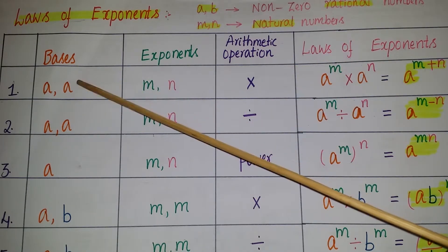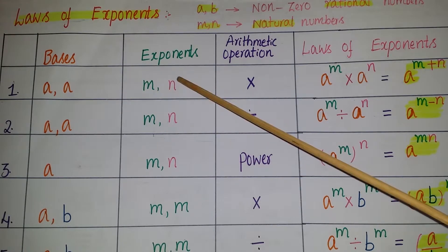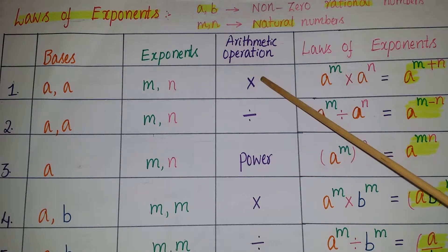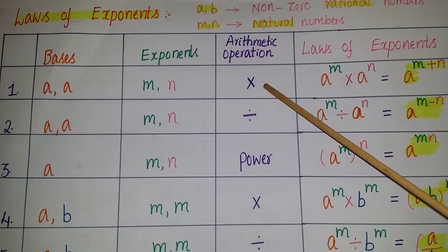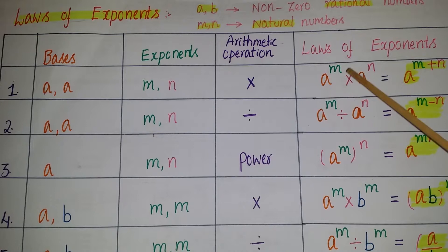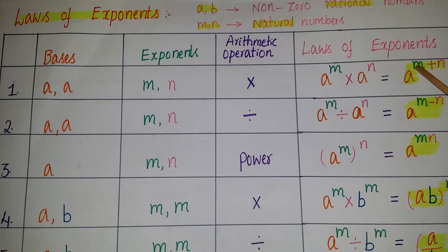The first law: if the bases are the same (a, a) and the exponents are different (m, n), then if you multiply the powers, we use the law of exponents: a to the power of m multiplied by a to the power of n is equal to a to the power of m plus n. Here we are adding the exponents.